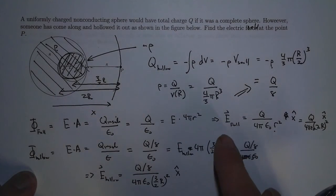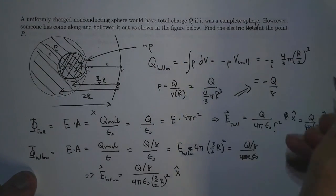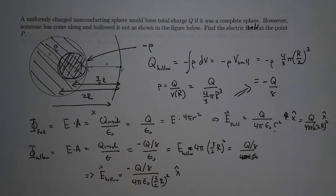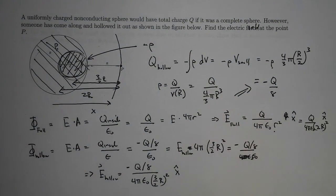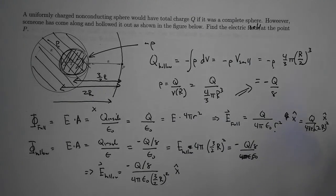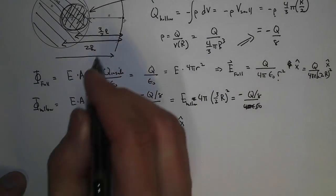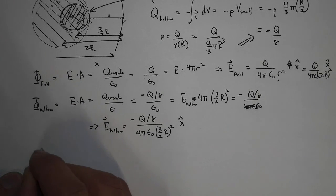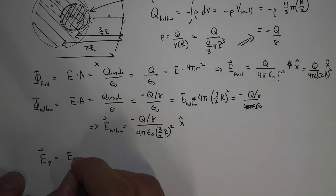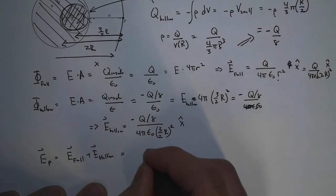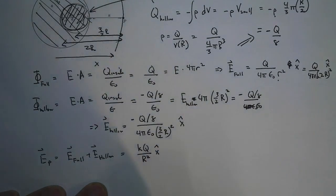This actually should be minus Q over 8 to make sure all signs are correct. What is the final electric field at point P? The electric field at P is the electric field of the full sphere plus the electric field of the hollow sphere. This is Q over 4 pi epsilon naught, which is Coulomb's constant k, over R squared in the x-hat direction.